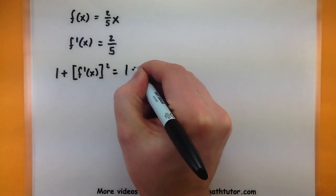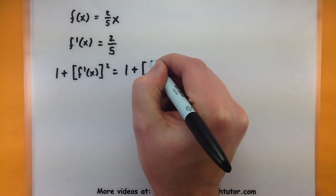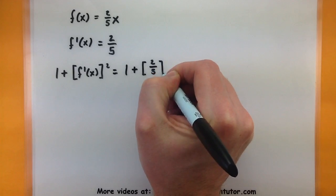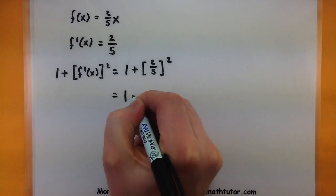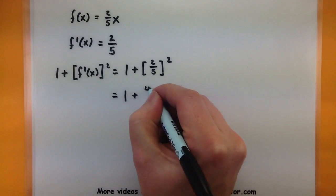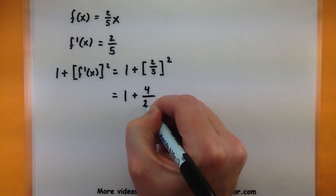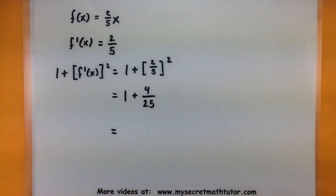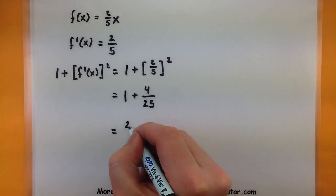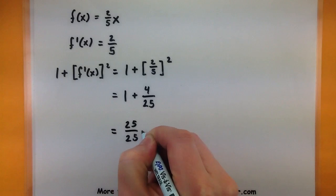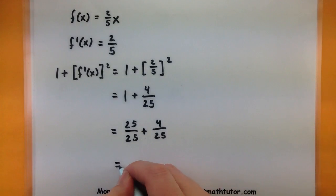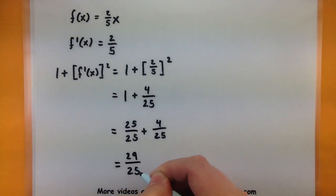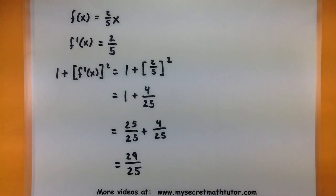So I'll take one plus the value of my derivative, all of that will be squared. Let's see, what does this turn out to be? So two squared gives me a four, five squared gives me a twenty-five, and combining these two things, this would be twenty-five twenty-fifths plus four twenty-fifths. Looks like I get twenty-nine twenty-fifths, and this is the piece that will live underneath that square root.